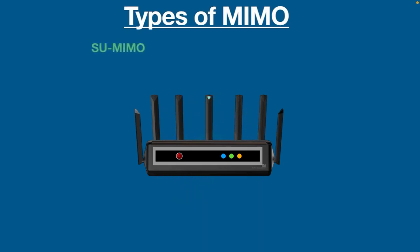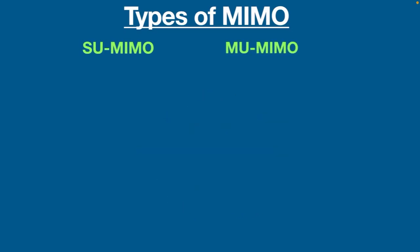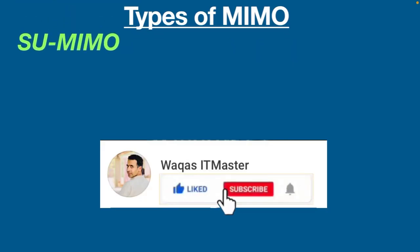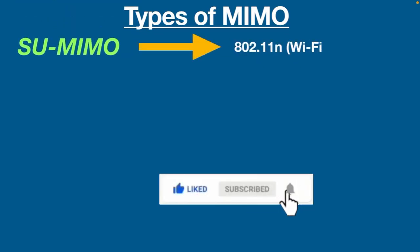The most common types of MIMO are Single-User MIMO and Multi-User MIMO. Let's start with the first one — Single-User MIMO. This technology was used in 802.11n, or Wi-Fi 4.